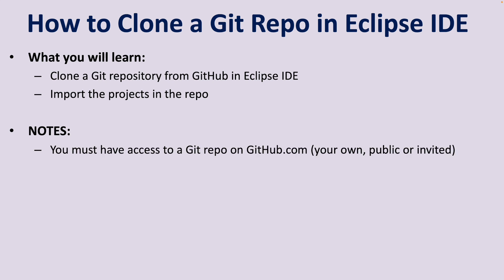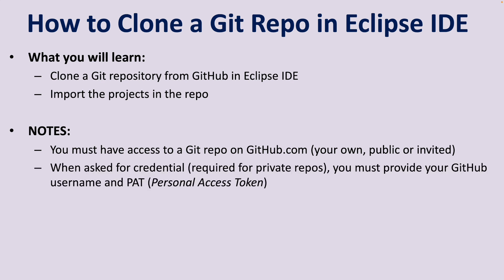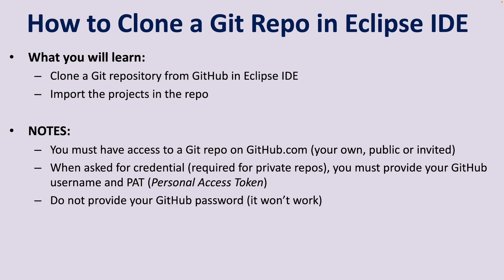Note that you must have access to a Git repository on GitHub.com — it can be your own repository, a public repository, or an invited repository. When asked for credentials, which is required for private repositories, you must provide your GitHub username and personal access token. Do not provide your GitHub password — it won't work.